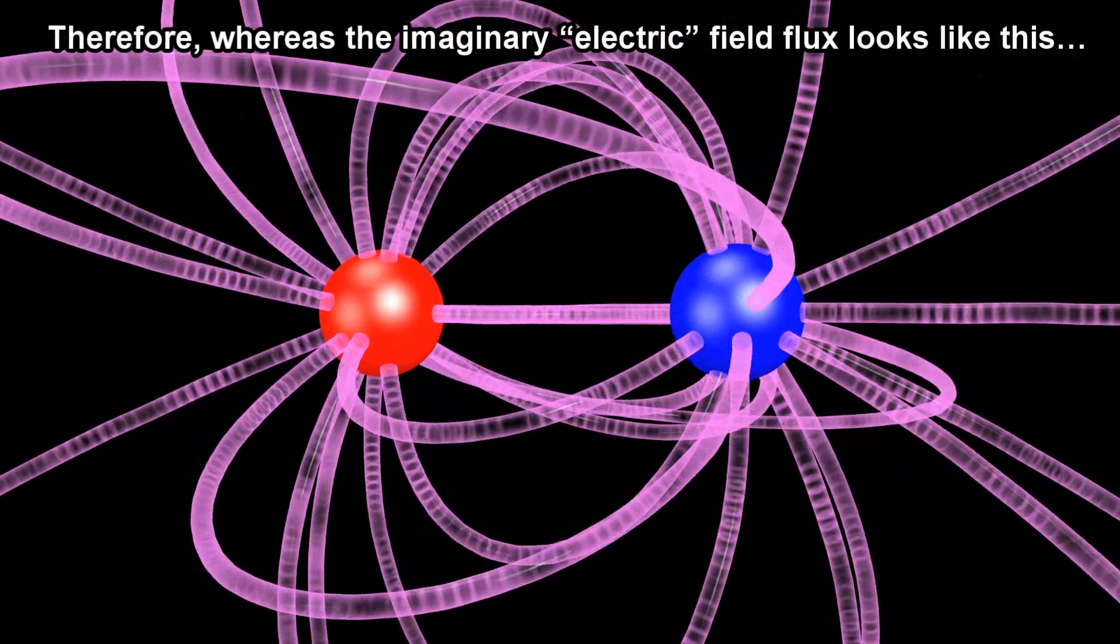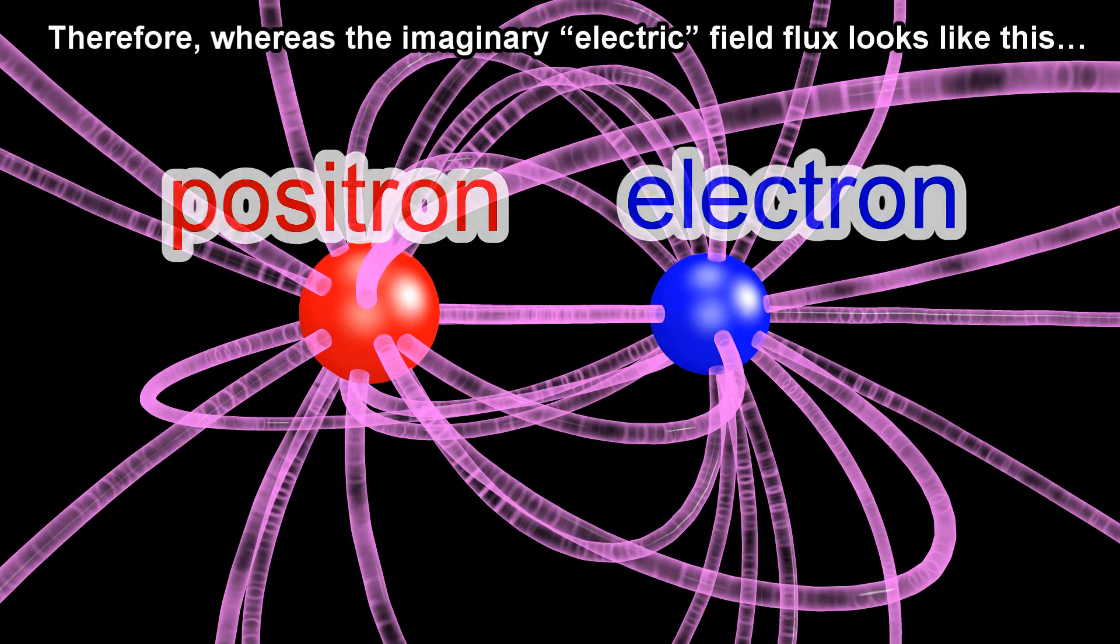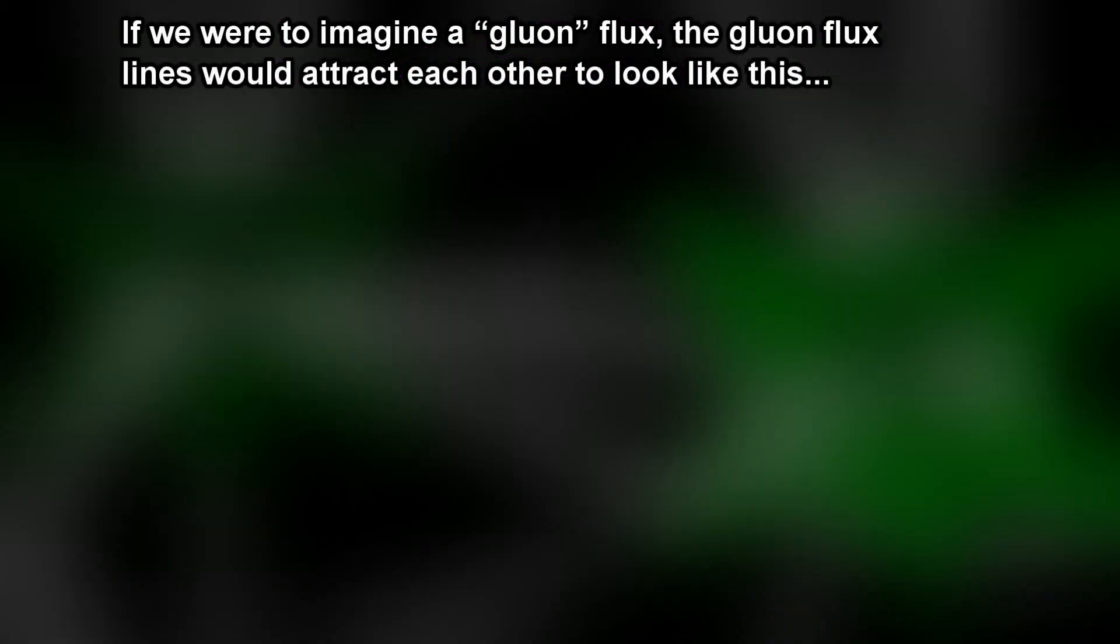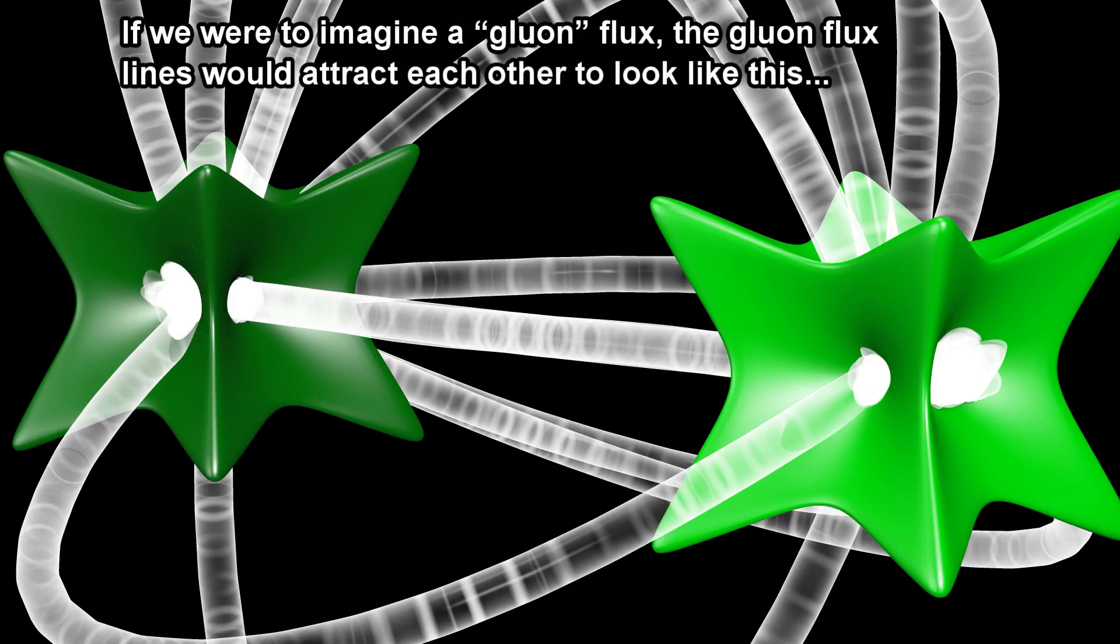Therefore, whereas the imaginary electric field flux looks like this, if we were to imagine a gluon flux, the gluon flux lines would attract each other to look like this.